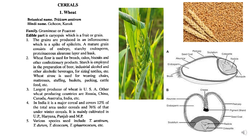The economically important part of wheat is caryopsis, which is a fruit or grain. The grain is produced in an inflorescence which is a spike of spikelets in wheat. A mature grain consists of an embryo, starchy endosperm, proteinaceous aleurone layer, and a husk.